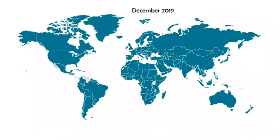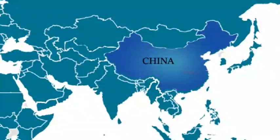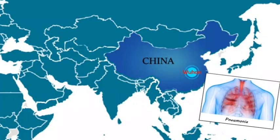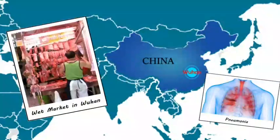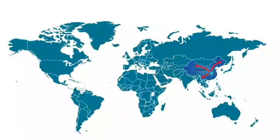In December 2019, in the city of Wuhan in China, a cluster of pneumonia cases were reported. Some of the early cases included people that either visited or worked at the wet market in Wuhan. The disease then started to spread across China and then spread to the neighboring countries.